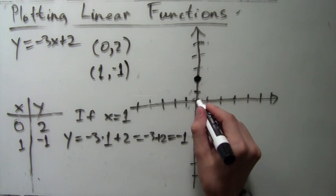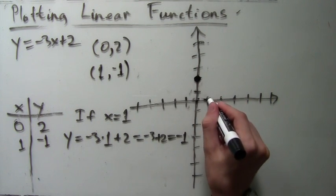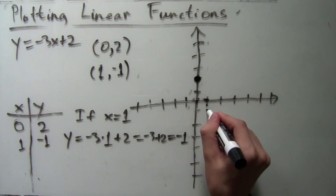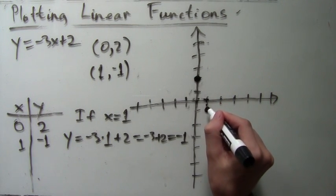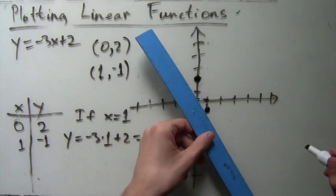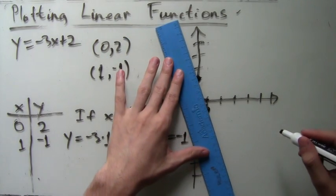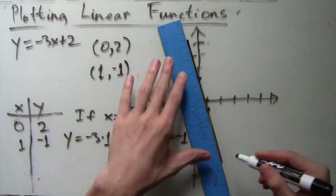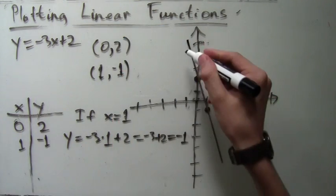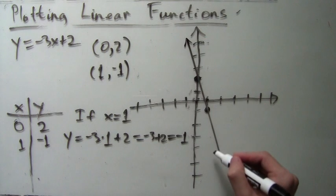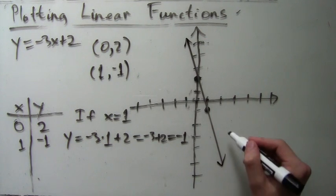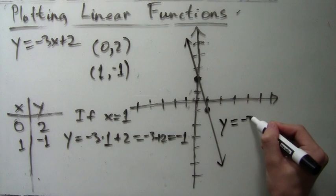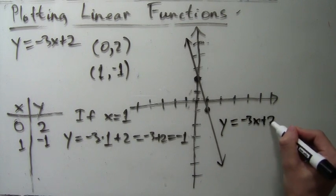The next point, (1,-1), is 1 to the right and 1 down from the origin. Next, we, as usual, use our ruler to connect the points. We draw the arrows on the ends and we label the line. And here is a completed graph—the plot of the function y=-3x+2.